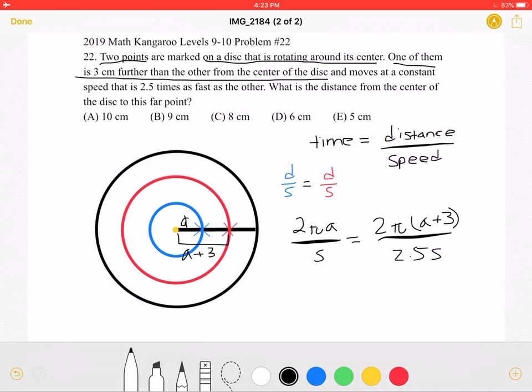The problem also states that the point further away from the center moves at a constant speed that is 2.5 times as fast as the other. So now, for these two points, we know that the time must be the same. And time is equal to distance over speed. So the time, which is the distance over speed of the blue, must be equal to the distance over speed of the red point.